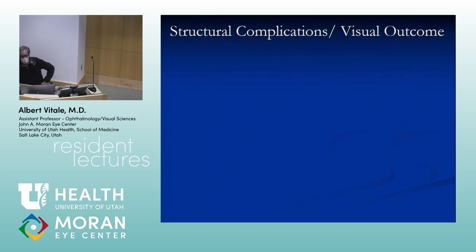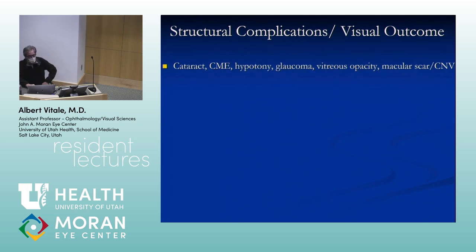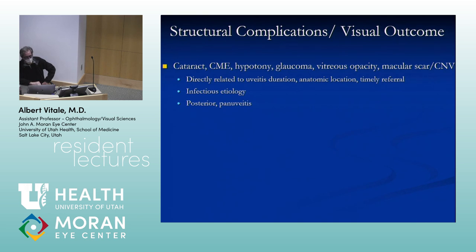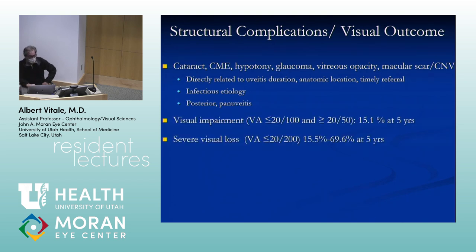Structural complications seen in kids with uveitis include PAS, cataract, CME, band keratopathy, glaucoma, hypotony, and macular scar. Glaucoma is a big problem because you can fix a cataract but not an optic nerve. These complications are directly related to duration of uveitis. Infectious etiologies, posterior and pan-uveitis are poor prognostic indicators. Visual impairment is not trivial — about 15% in five years, with significant rates of severe visual loss.